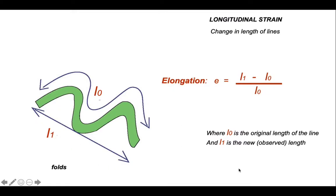Longitudinal strain is the change in length of lines. It's represented by the parameter E for elongation, which is simply the length of the cross-section we see today, L1, take away the inferred original length, L0, divided by that original length of section.